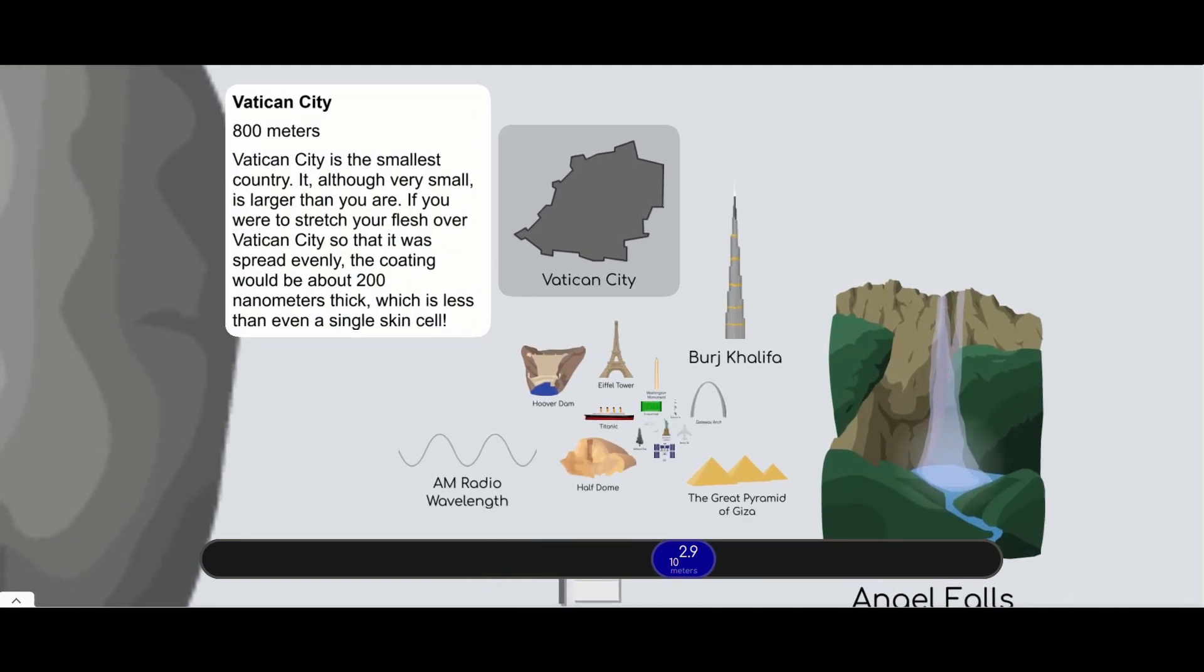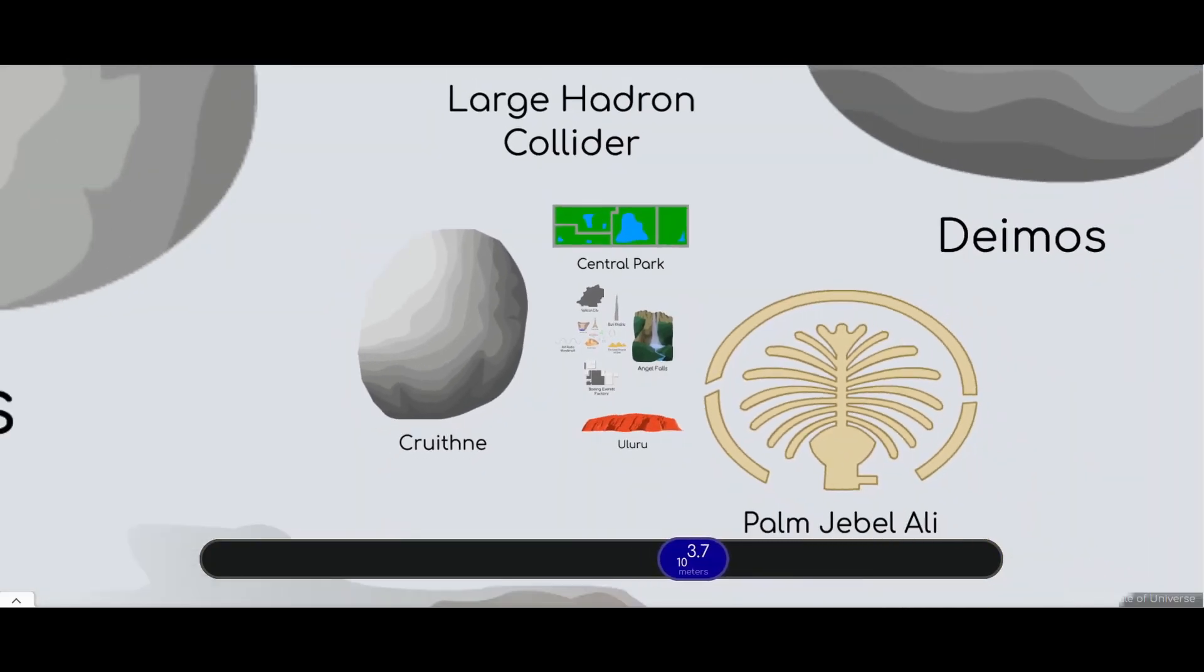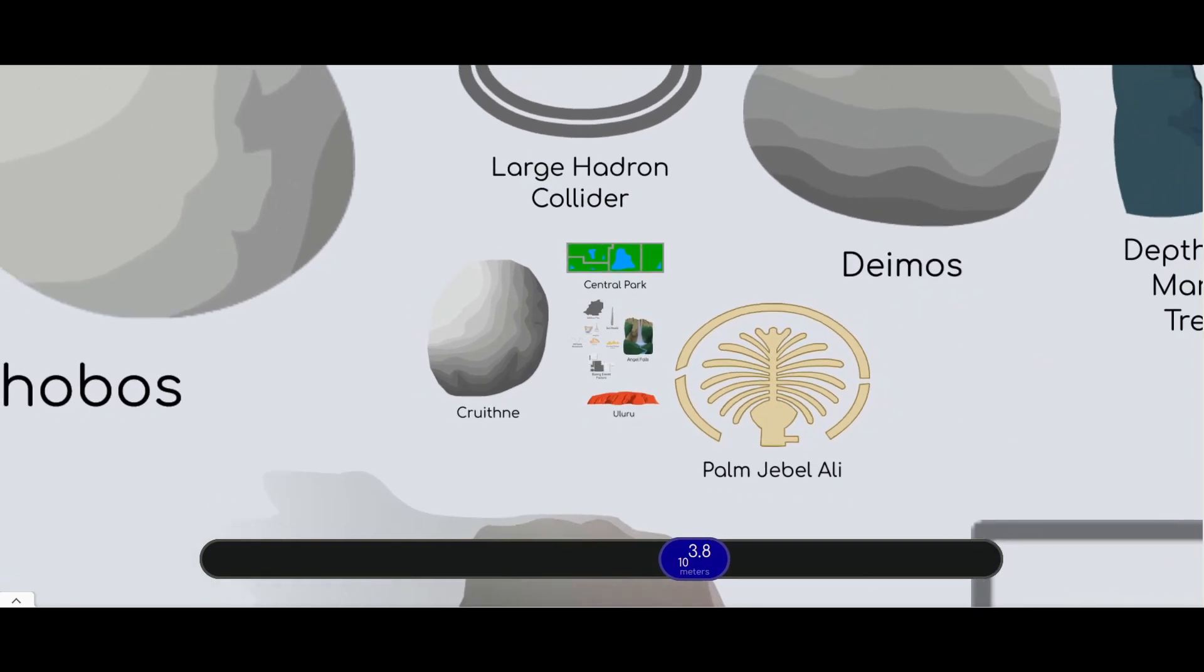Vatican City. A lot of people didn't know this, it's its own country. Its own rules, its own government, its own police force. Obviously heavily religiously influenced. That's why it's called Vatican City. Let's carry on. We're getting to the bigger stuff now.